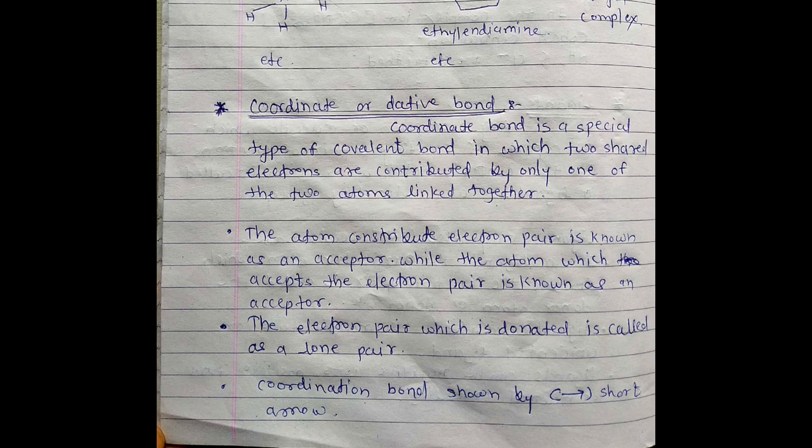The electron pair which is donated is called lone pair. Atom that donates electron pair is called lone pair. Coordination bond is shown by single-headed arrow.